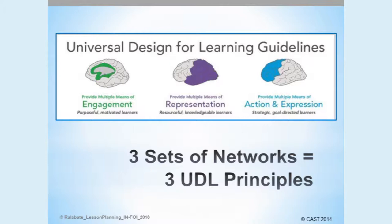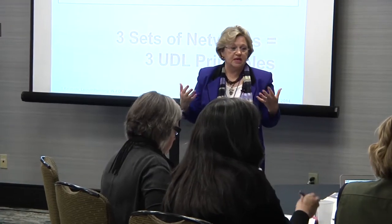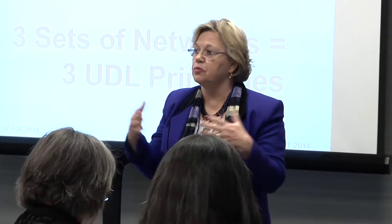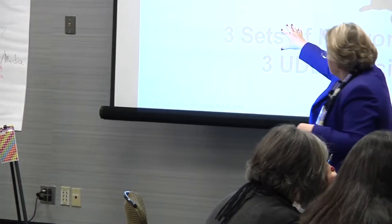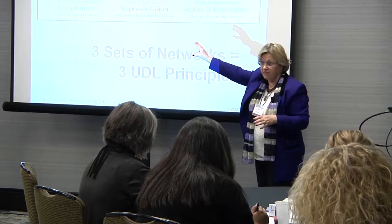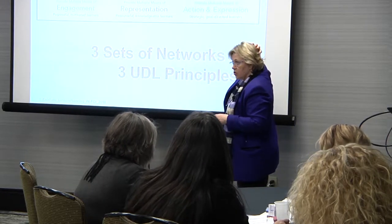Universal Design for Learning is based on how our brains work. In every brain there are three sets of neural networks, and these three sets are activated when we're learning anything. One network is in the center of your brain — this green area — and it has to do with your affective networks: how you emotionally deal with or address learning. One of the major principles of UDL is to use multiple means of engagement in order to engage those affective networks.